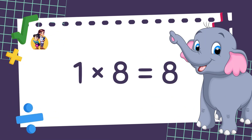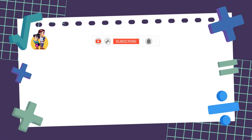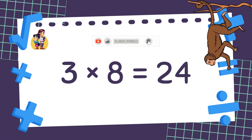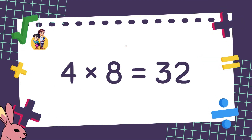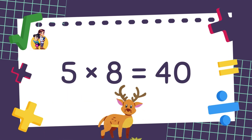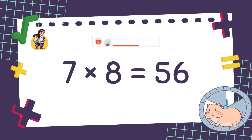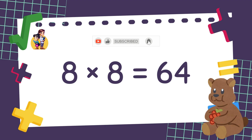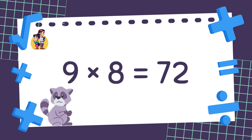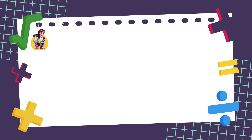1 times 8 is equal to 8. 2 times 8 is equal to 16. 3 times 8 is equal to 24. 4 times 8 is equal to 32. 5 times 8 is equal to 40. 6 times 8 is equal to 48. 7 times 8 is equal to 56. 8 times 8 is equal to 64. 9 times 8 is equal to 72. 10 times 8 is equal to 80. Well done!